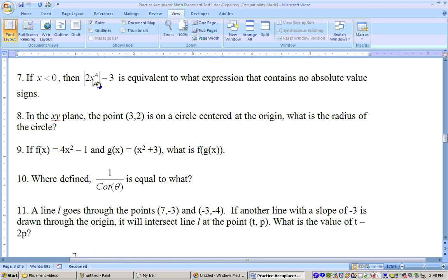Well, the x to the 4th, when you raise any number to the 4th power, it becomes positive. And a positive times 2 is positive, and the absolute value just keeps it positive. So in other words, the absolute value of 2x to the 4th is the same as just 2x to the 4th. So this would be equivalent to the expression 2x to the 4th minus 3.